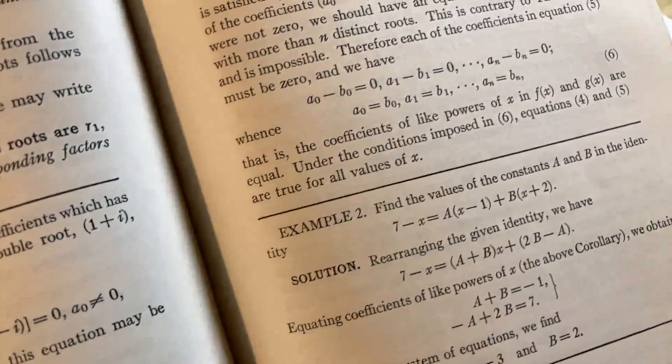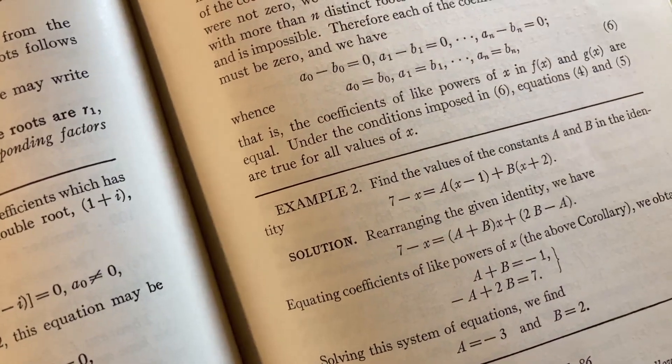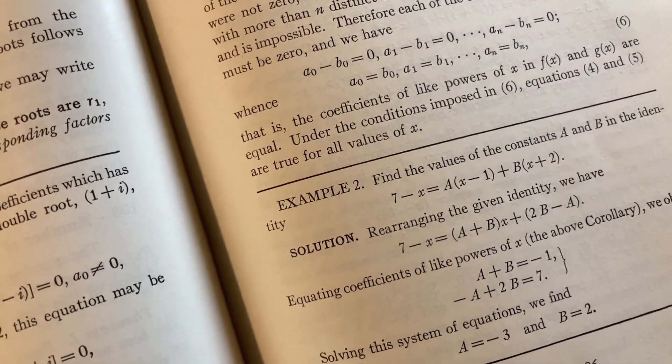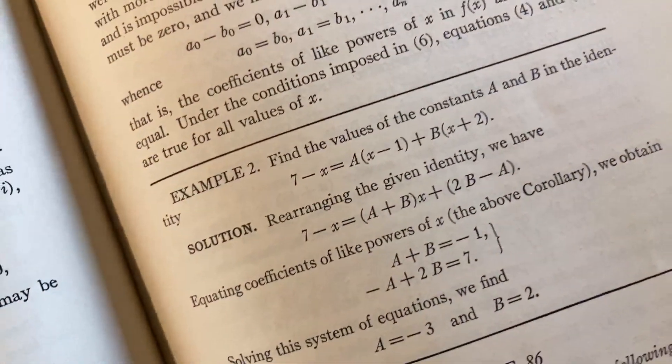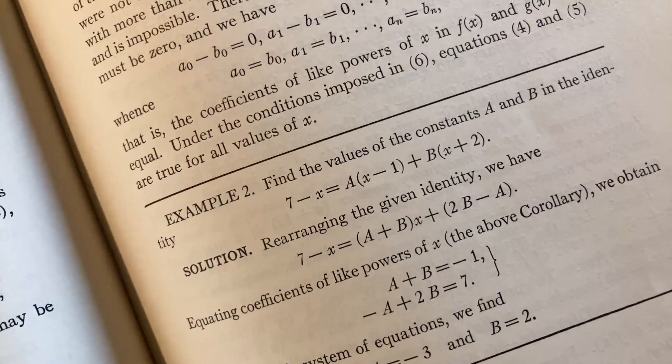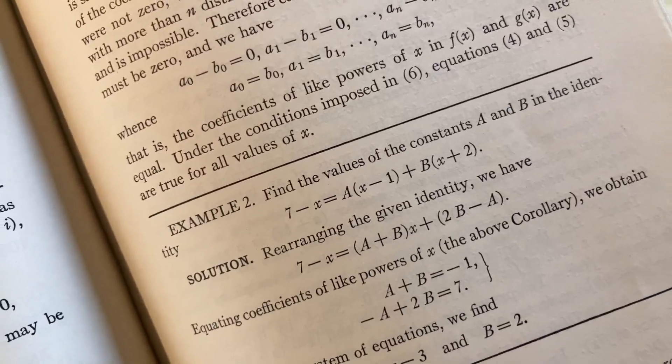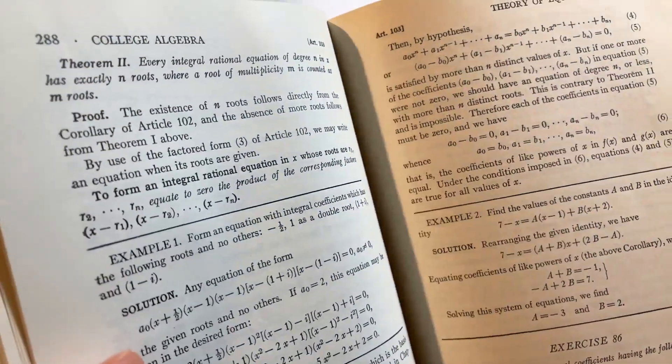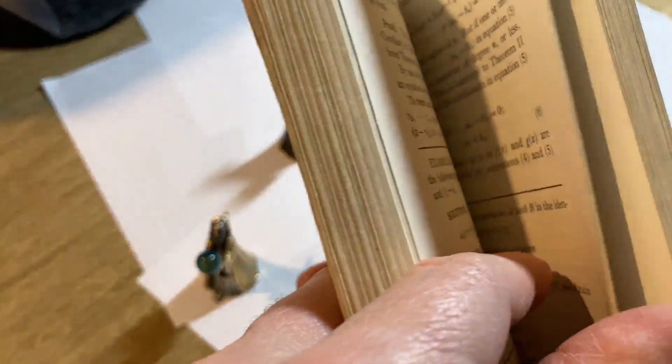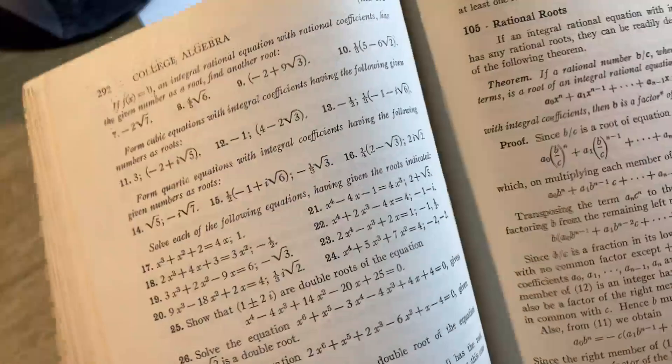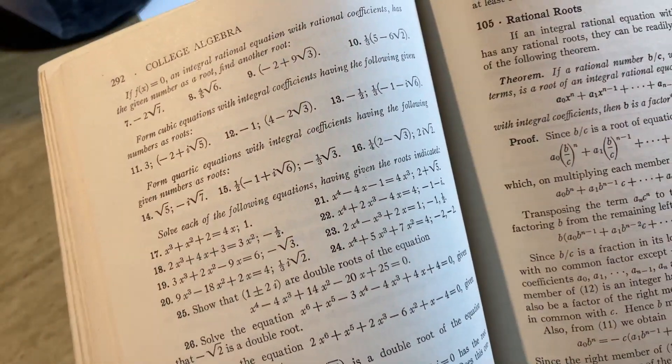What's this one here? Find the values of the constants a and b in the identity. That's useful. This is basically called equating coefficients. Here it even says it: equating coefficients of like powers of x. This is very useful when you're studying partial fraction decomposition. It's also very useful when you're studying differential equations. There's something called the method of undetermined coefficients. And certain problems lend themselves to doing partial fractions by the method of equating coefficients. So the stuff you learn in this book applies to other areas of math, which makes it beautiful.